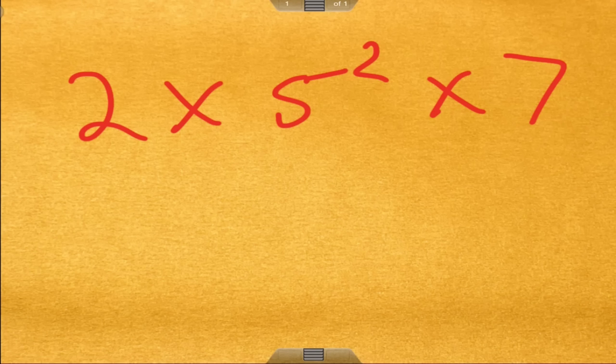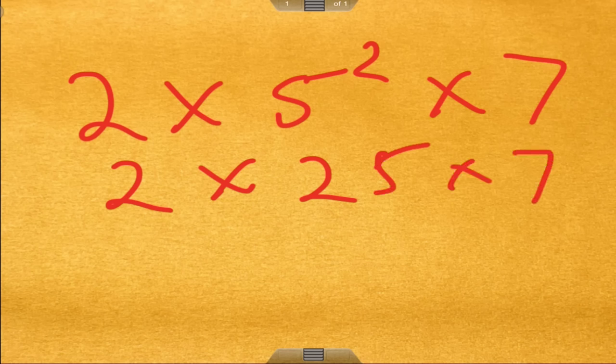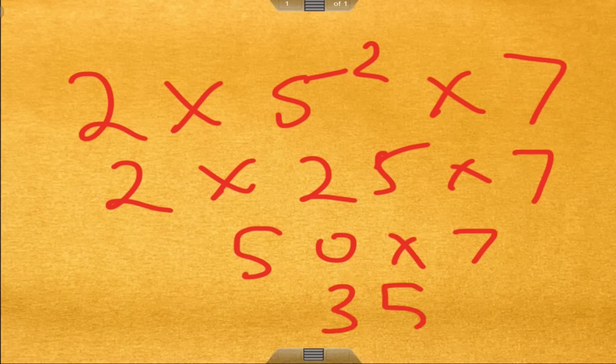So if I do this, it's 2 times 25 times 7. So 2 times 25 is 50. 50 times 7 is 350. So the least common multiple of 10, 25, and 35 would be 350.